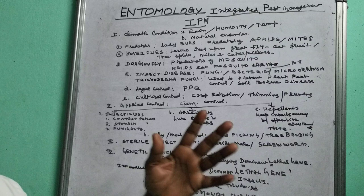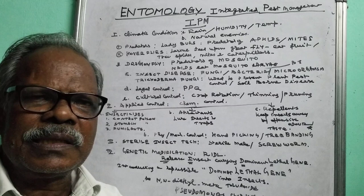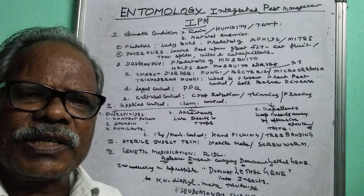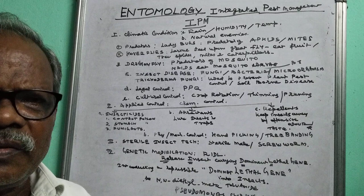We will see pest management through various ways. In integrated pest management, we integrate so many things — natural control, biological control, chemical control, and also genetic manipulation techniques. We also introduce bacteria and microorganisms into the plant to kill insects. We are adopting so many techniques to control the insects effectively. We will see them one by one.